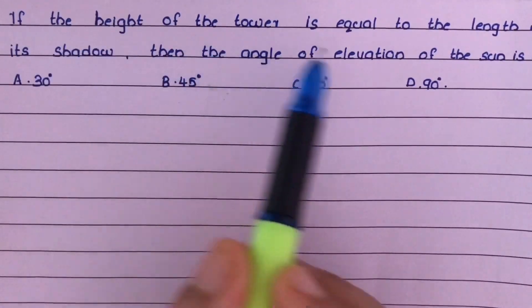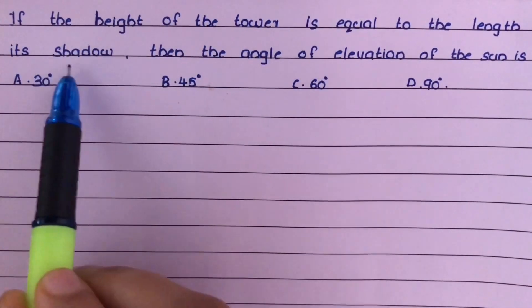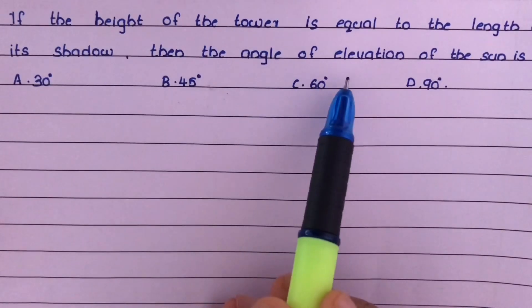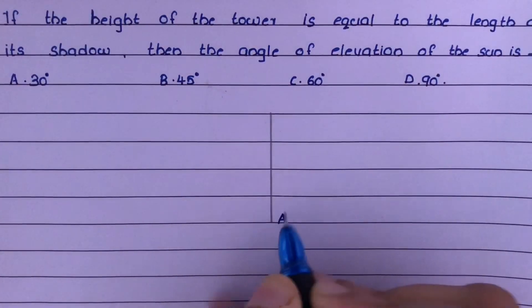If the height of the tower is equal to the length of its shadow, then the angle of elevation of the sun is? Consider a tower.